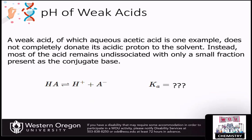So how do we calculate the pH of a weak acid? The weak acid doesn't totally dissociate in solution — it's not going to go to completion the way a strong acid would. Most of the acid is still going to remain in the undissociated state, and only a small fraction will move into the dissociated state, being present as the conjugate base.